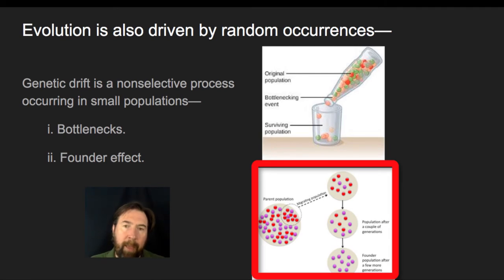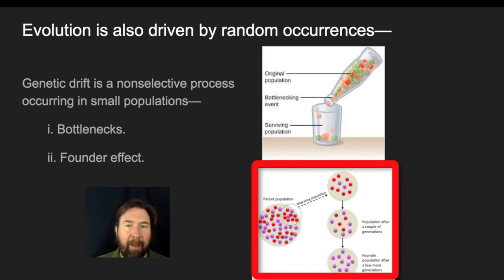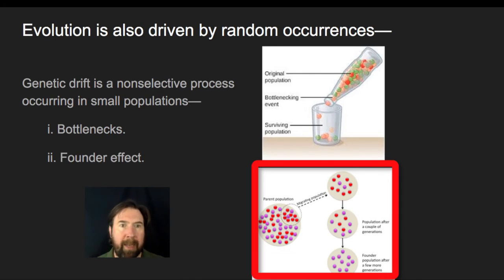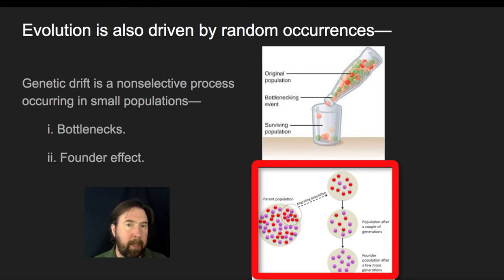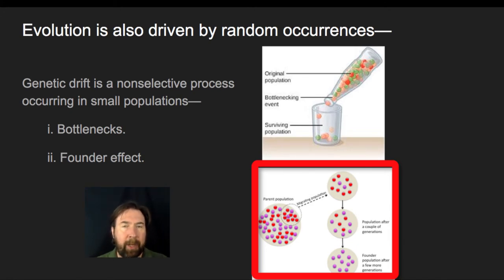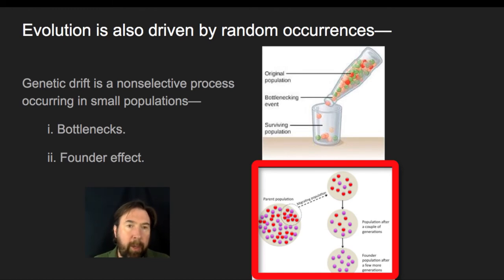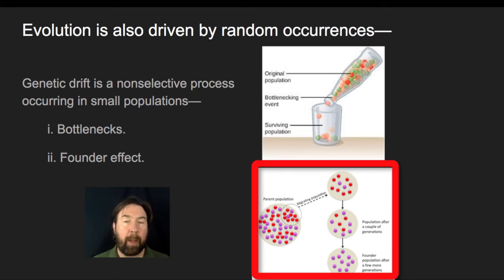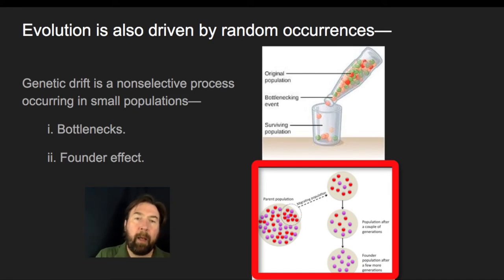A founder effect is when we take a group and isolate them — say, migrating a population from an original population out to an island. That group is not necessarily representative of the entire gene pool of the original population. It wasn't like they counted allele frequencies and elected which birds would go out to the Galapagos Islands. There's a randomness to the genes in that founding population, and therefore a slightly different gene pool, coupled with new selective pressures in that founding area. We may see rapid diversification from the original population because of that randomness in which genes made it out.